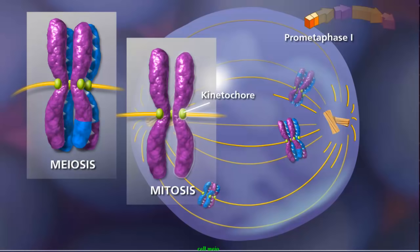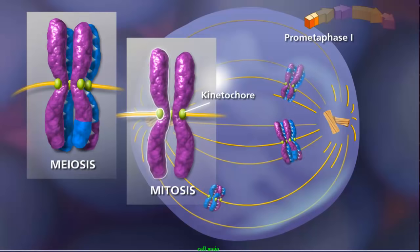In mitosis, each sister chromatid is attached to a spindle fiber. The fibers originate from opposite poles.